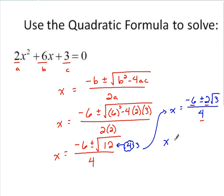We could say that x equals, dividing 2 into all of those values, negative 3 plus or minus, 2 goes in here, it would be 1 times root 3, all over, 2 goes into 4, 2 times.